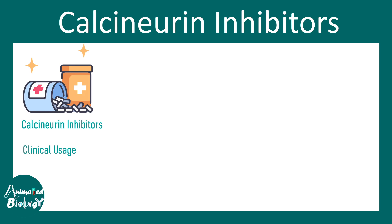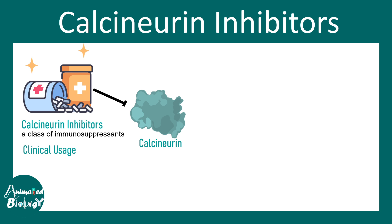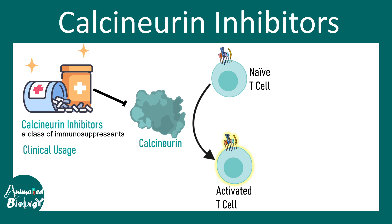In this video we'll be talking about a class of immunosuppressant drugs known as calcineurin inhibitors. Calcineurin inhibitors are potent immunosuppressants and they inhibit the molecule known as calcineurin, which is a calcium-dependent phosphatase enzyme. Calcineurin is involved in the process of naive T cell to activated T cell transformation, so activation of T cells requires the activity of calcineurin. When calcineurin is inhibited by a certain class of drug, naive T cells cannot be activated.